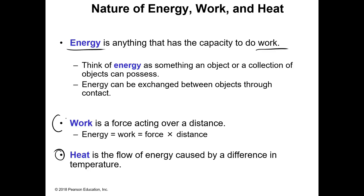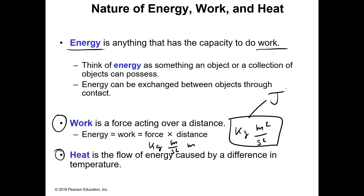Work is equal to force times distance. The SI units for force would be kilograms times meters per second squared — that's a mass that's accelerating. When you multiply by distance in meters, the SI units for work come out to kilograms times meters squared per second squared, and we simply call that a joule. The joule is roughly the energy required for one heartbeat. We also have calories and other units, and it's important to remember these SI units for calculations.